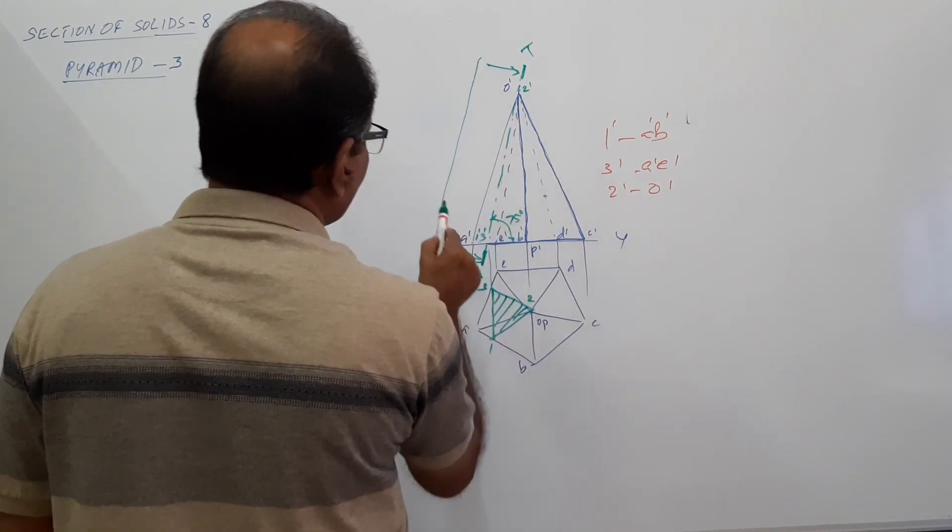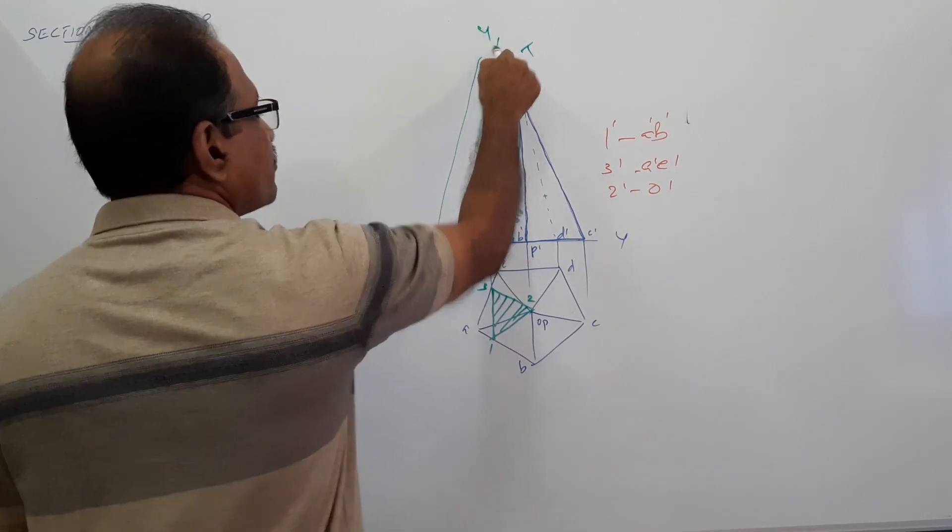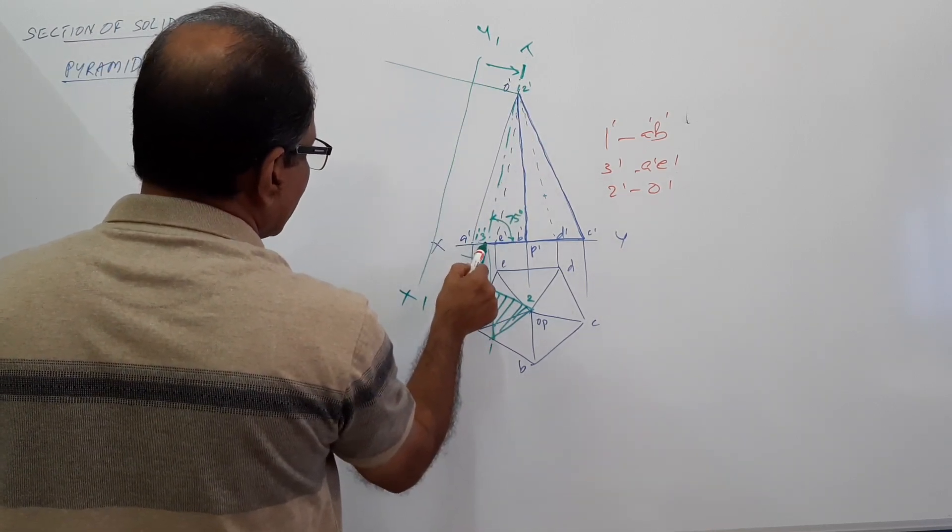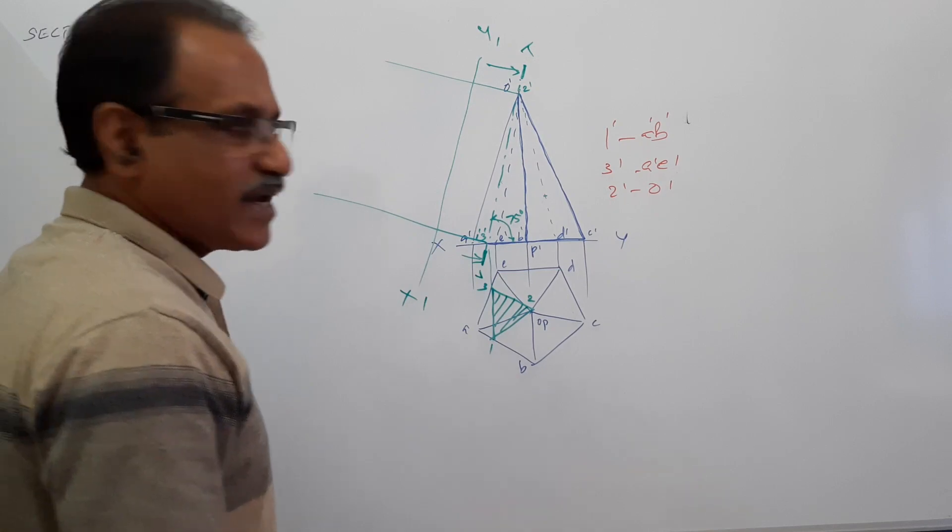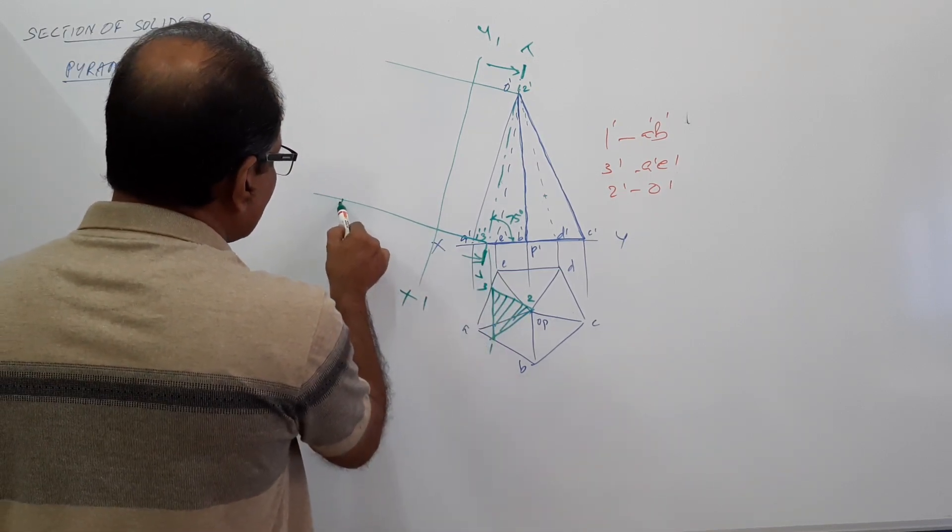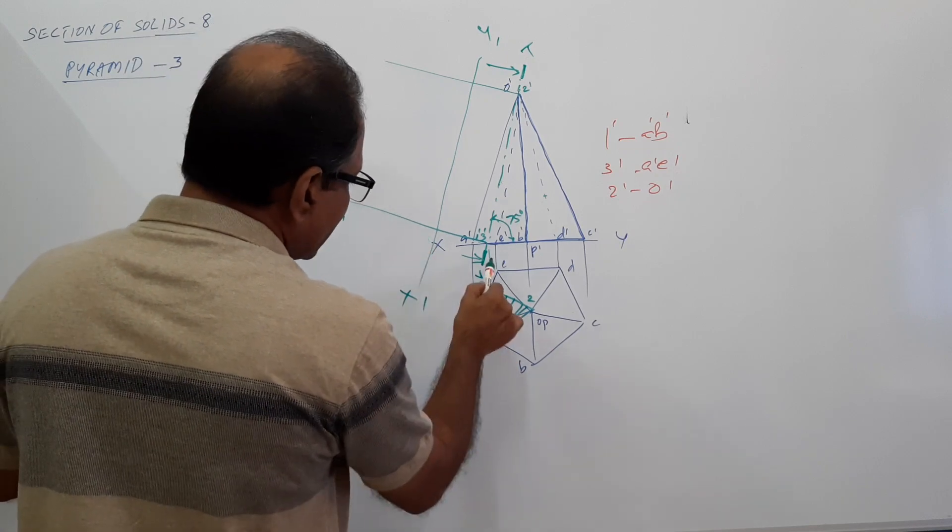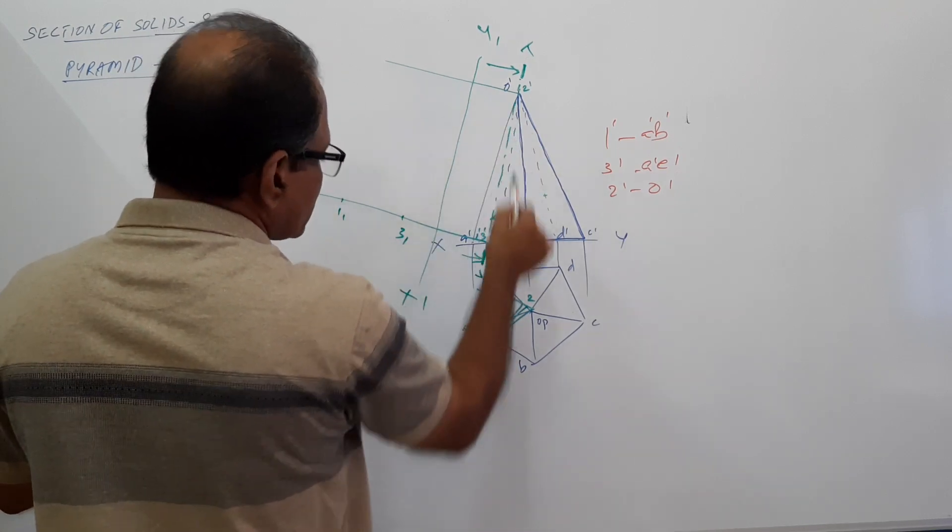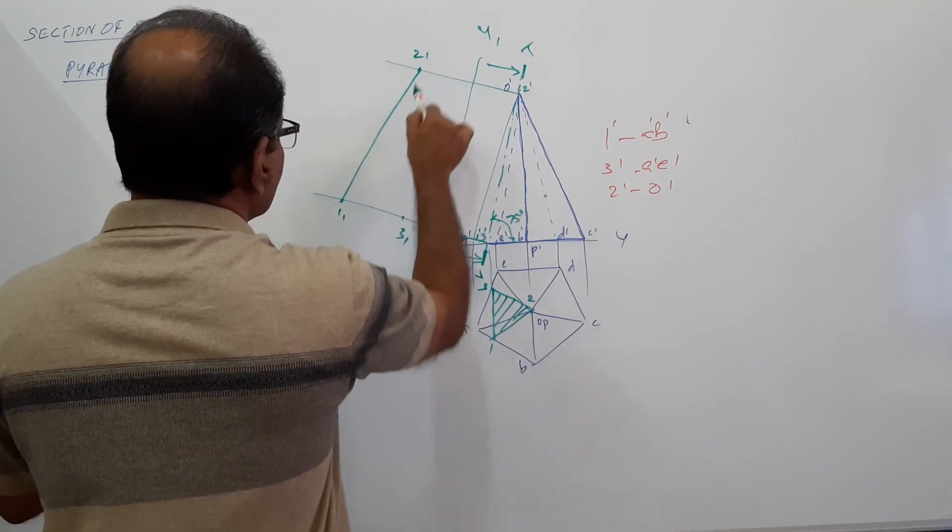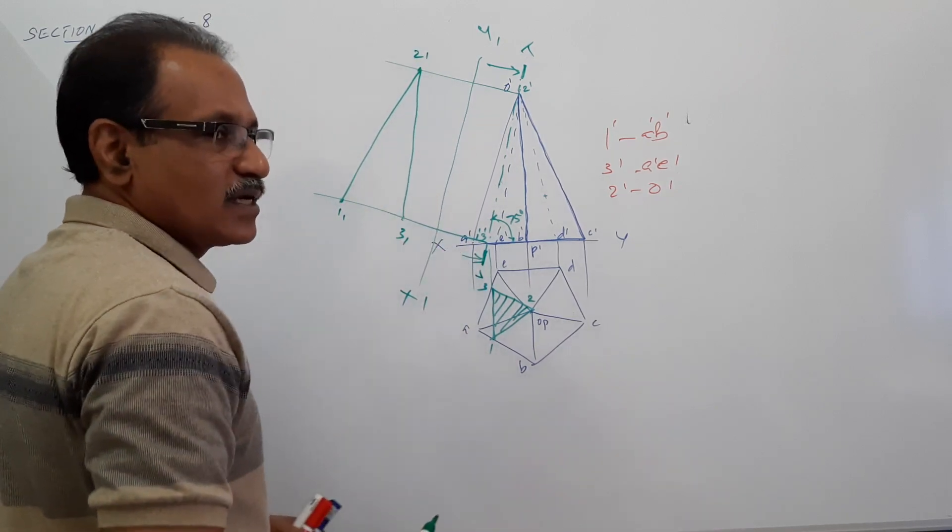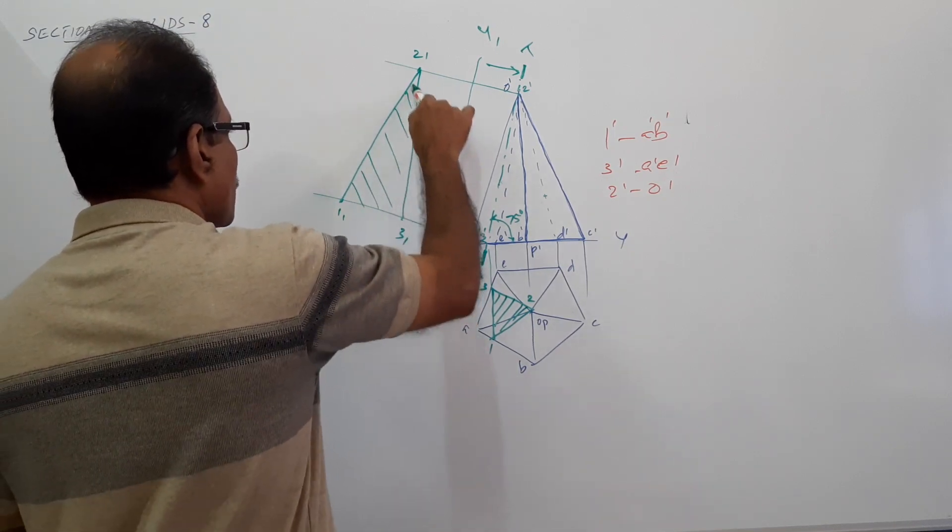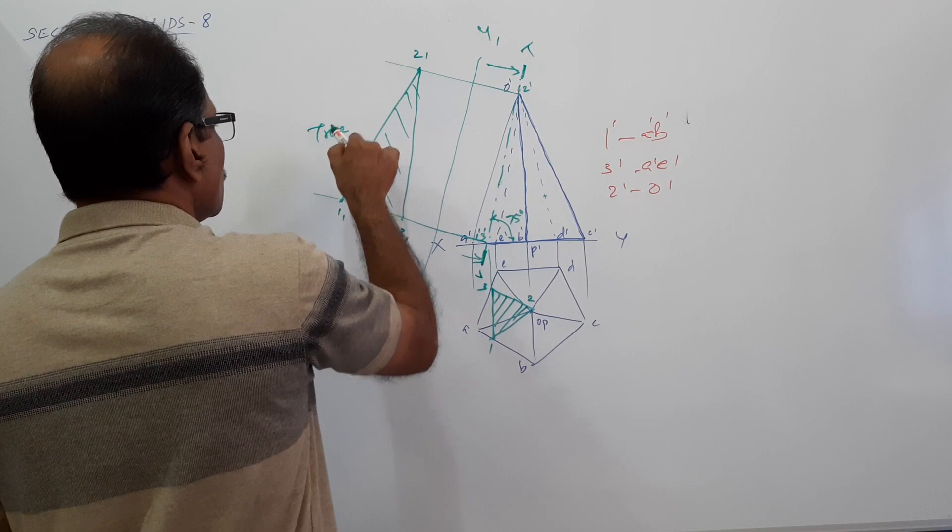You draw the true shape. Draw an X1, Y1 far away to the cutting plane. Draw projectors perpendicular to the cutting plane. 1 is this far away from X, Y. Take that distance and mark. 1, 1. 3 is this far away from X, Y. 3, 1. 2 is this far away from X, Y. 2, 1. Connect. What do you get? You get a triangle. True shape.